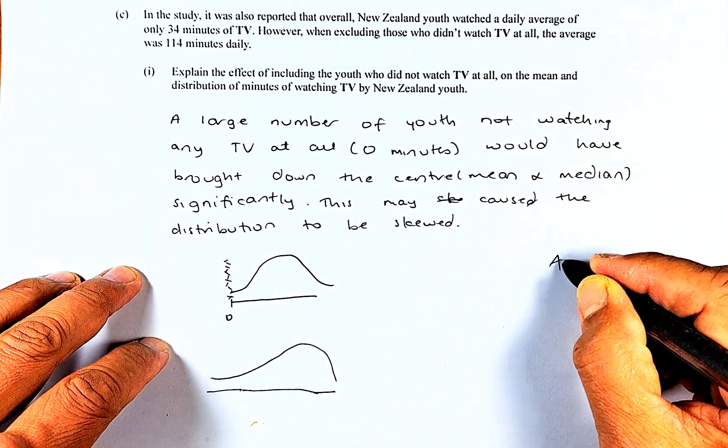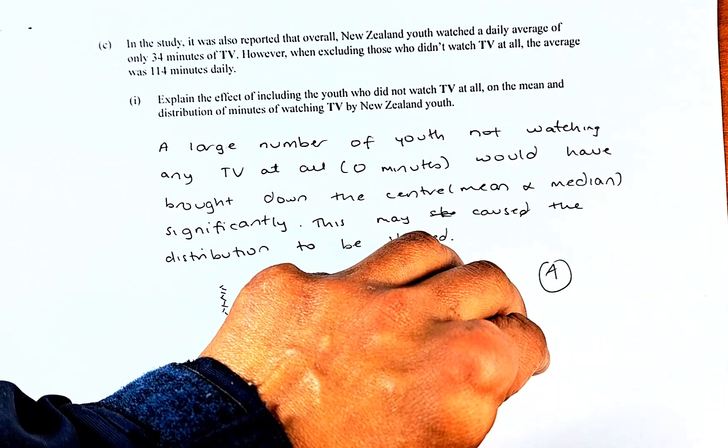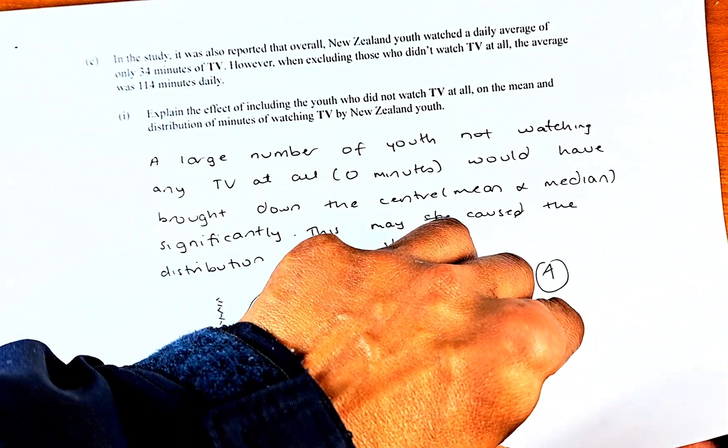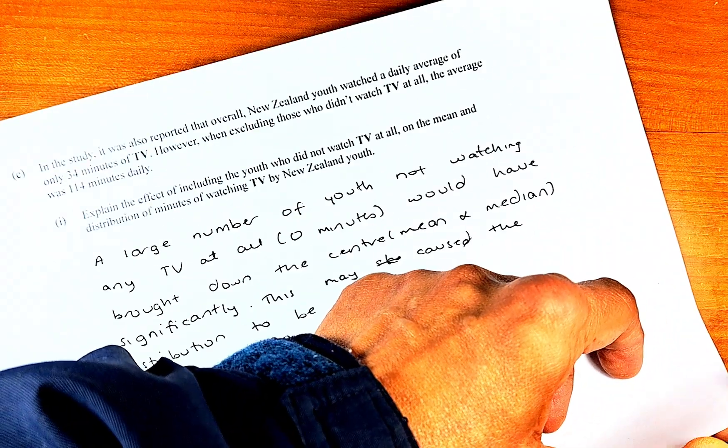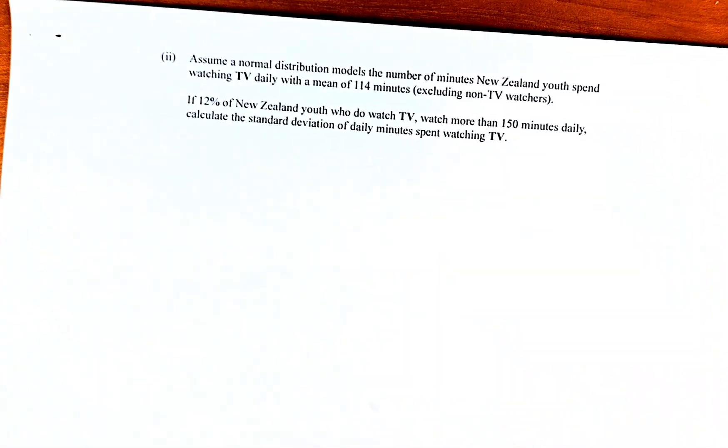And now we're going to do the second part, which is the excellence part. The excellence part is doing inverse normal and you need to get a graphic calculator. If not, it'll take some time to solve this. Let me get this paper out of the way.